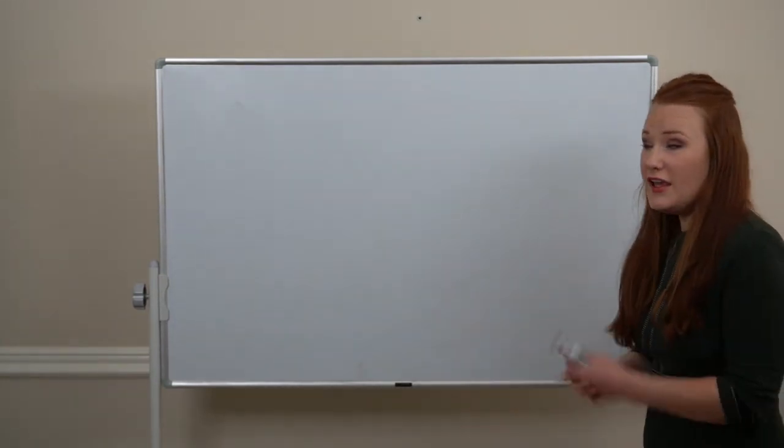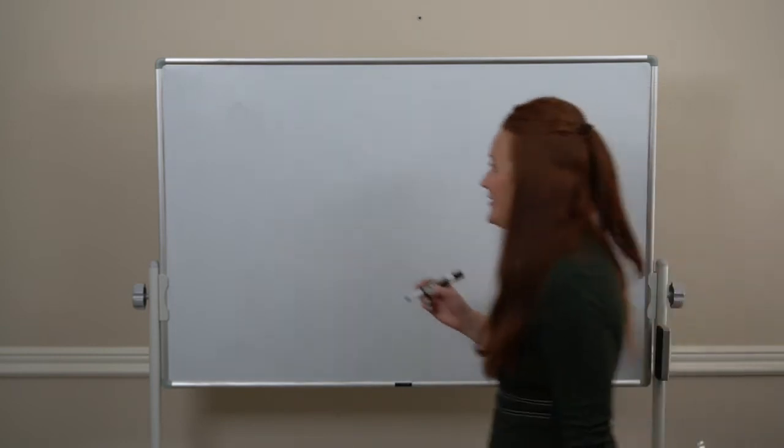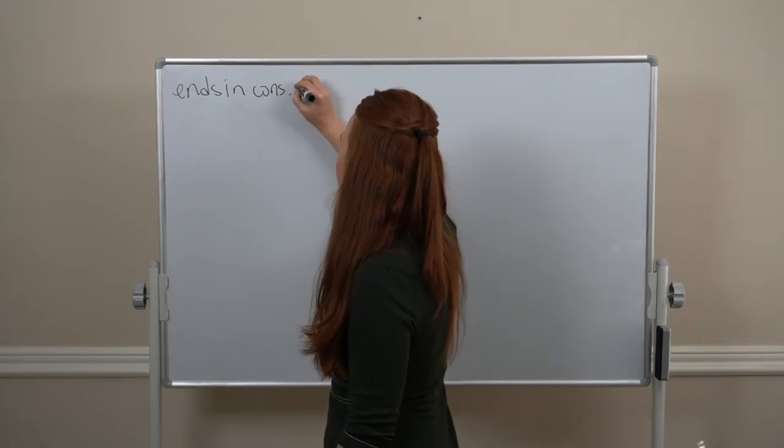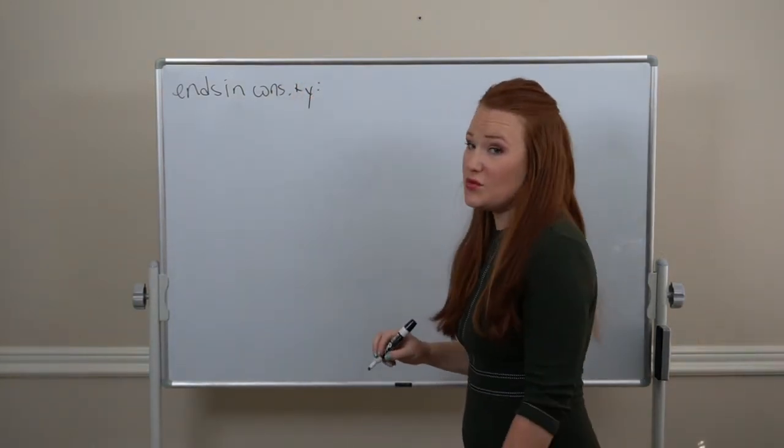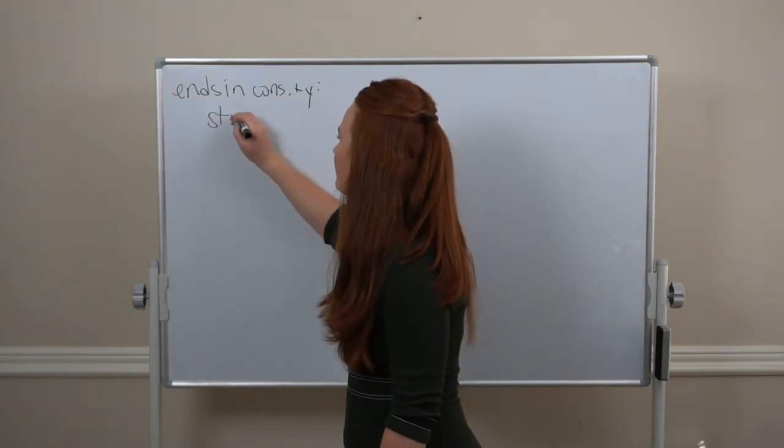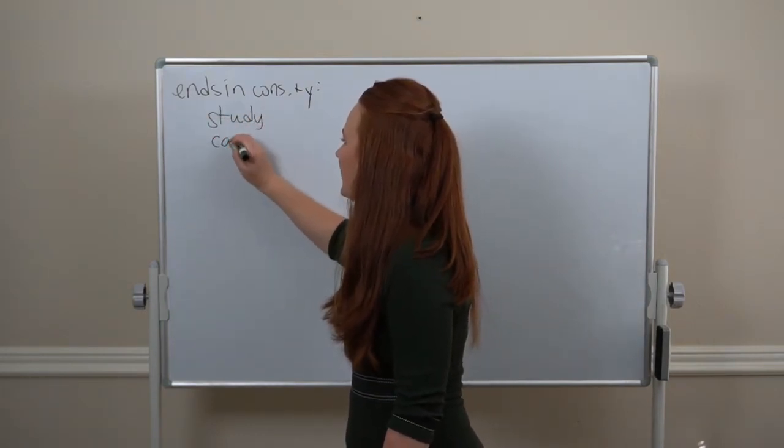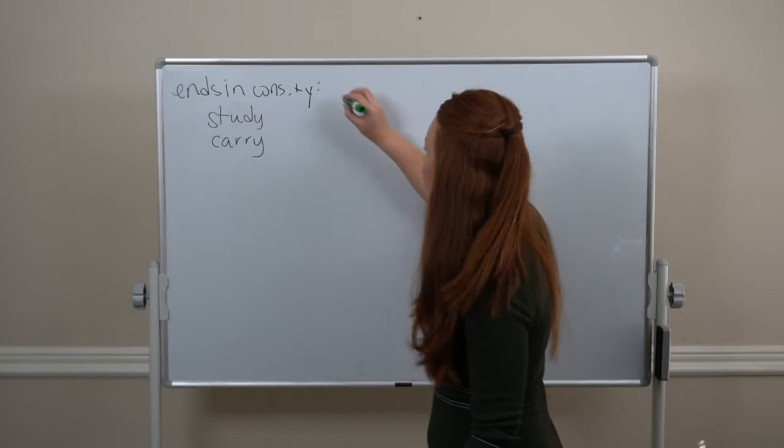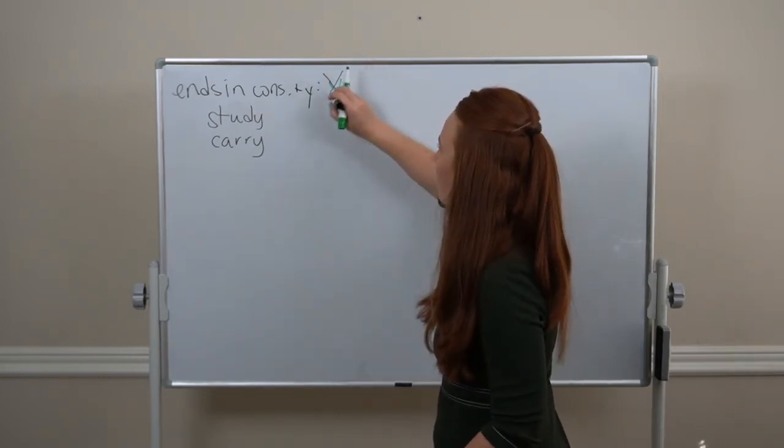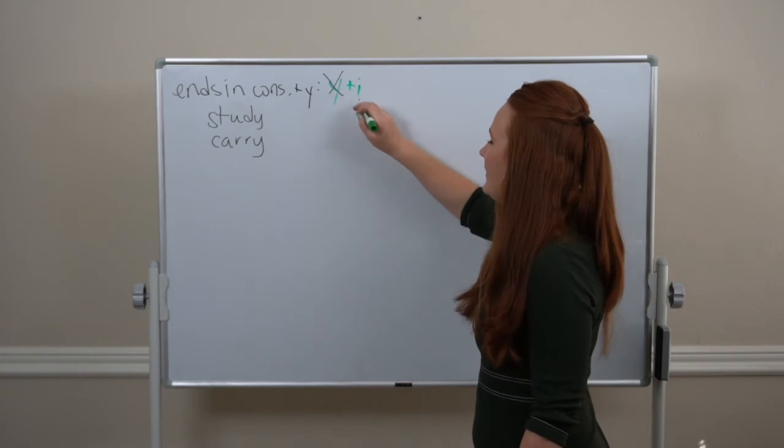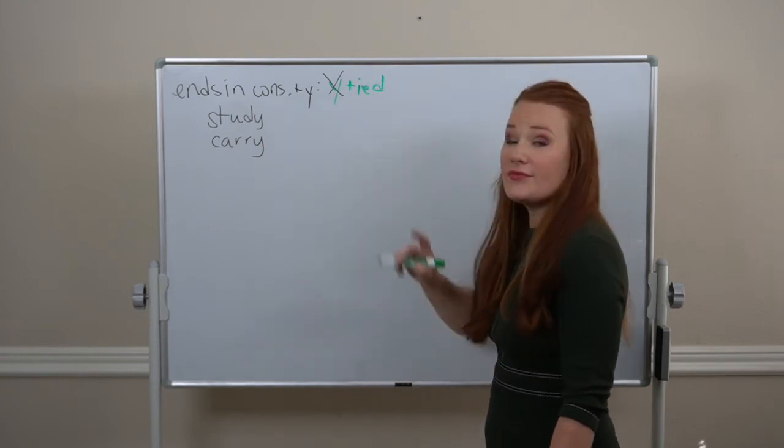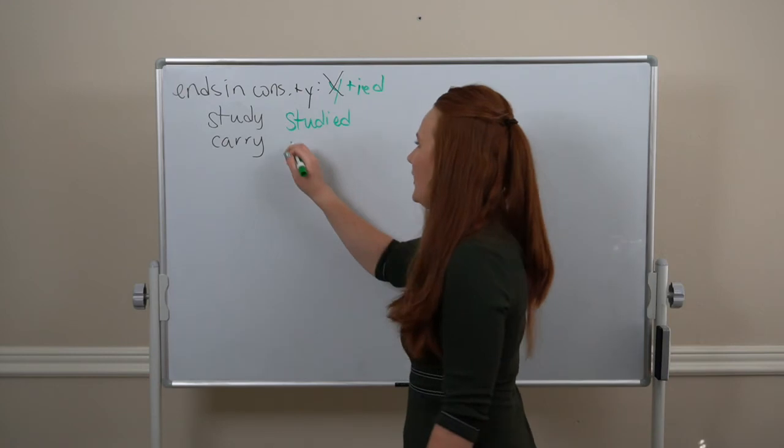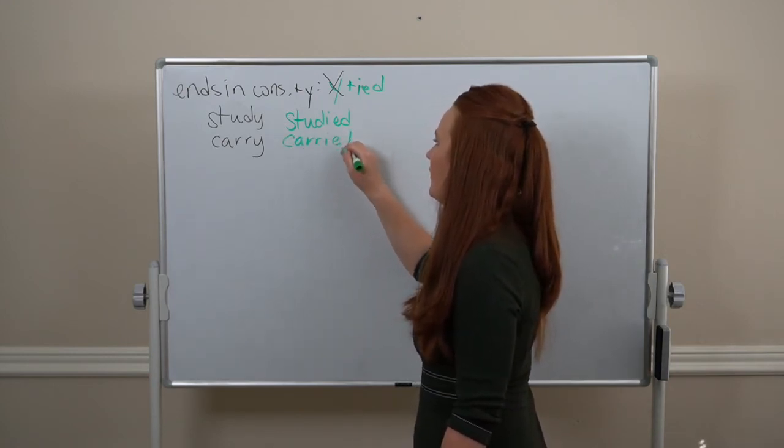So, first off, if we have a verb that ends in a consonant and a consonant and a Y, like study or carry. In this situation, we're going to get rid of the Y and add I, E, D. So, study, no Y. We get studied. And for carry, carried.